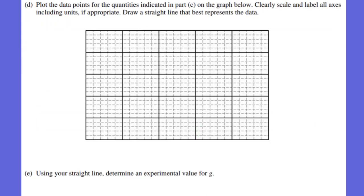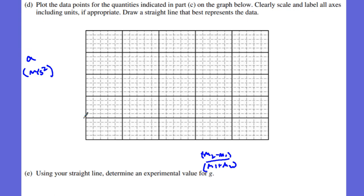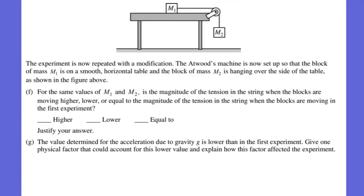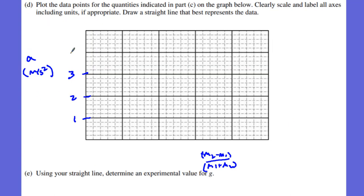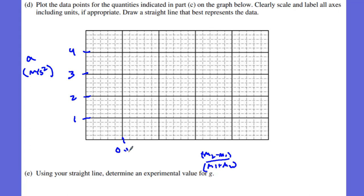For the graph, put acceleration in meters per second squared on the vertical axis, and (M2 minus M1)/(M1 plus M2) on the horizontal axis. The acceleration values range from 1.15 up to 4.21, so scale the vertical axis 1, 2, 3, 4. The horizontal values range from 0.14 to 0.41, so scale from 0.1 to 0.4.